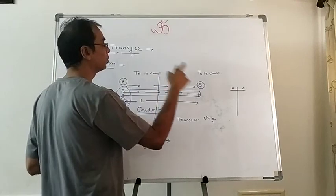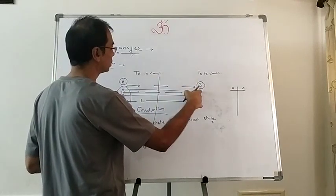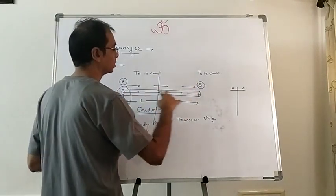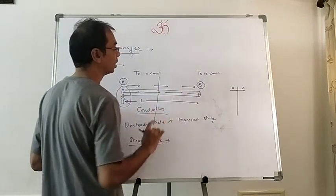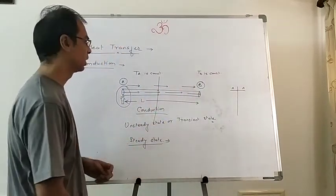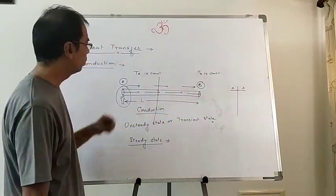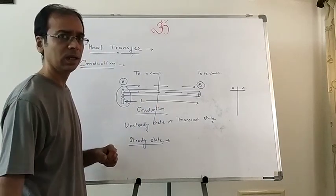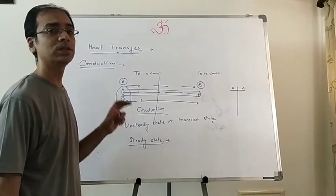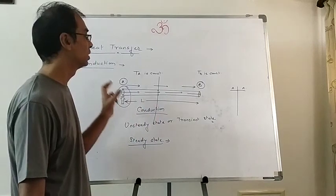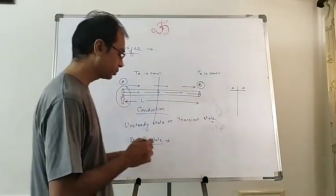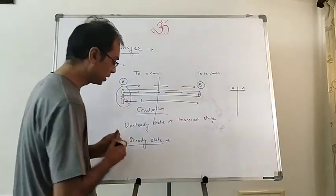In steady state, temperature at A is constant and temperature at B is constant. Whatever energy you are giving is being transferred from one end to the other — this is the steady state. Now we are going to find out how much energy is actually passing from one end to the other.